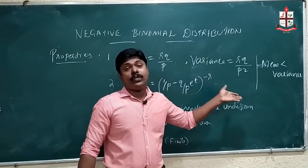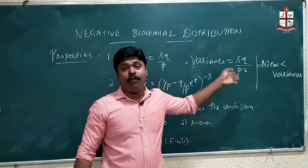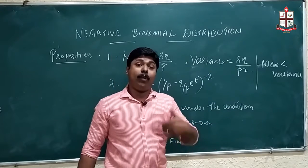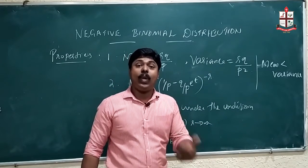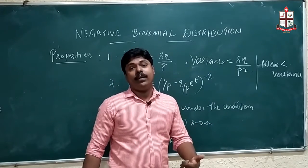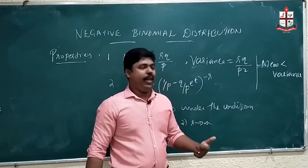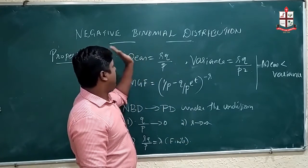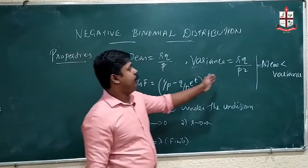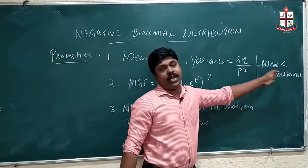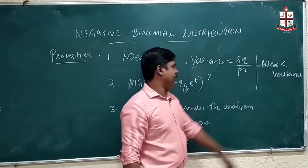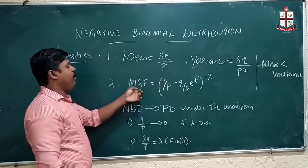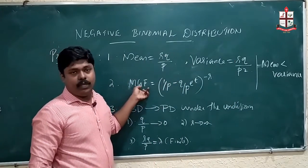In binomial distribution, the mean is greater than the variance. In negative binomial distribution, the mean will be less than the variance. This is a key property of the negative binomial distribution.